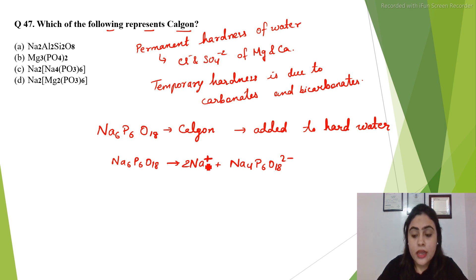With every positive there is a negative. If a positive is added, negative is added. So if here there are 2 plus, then there will be 2 minus here. That's why this charge will balance.